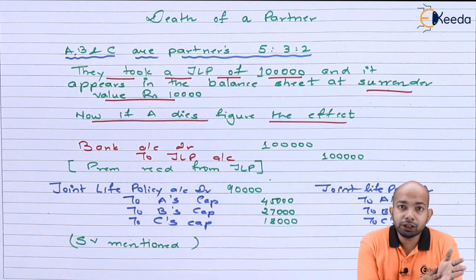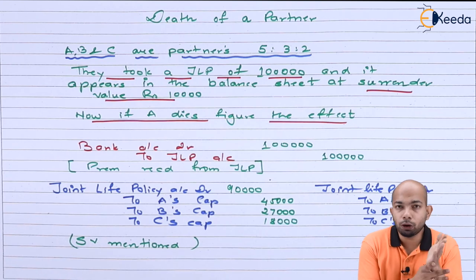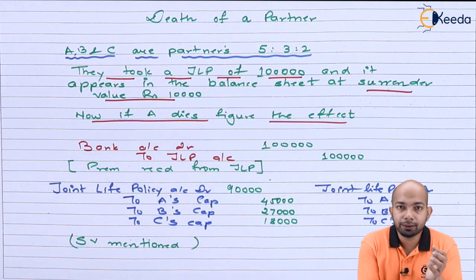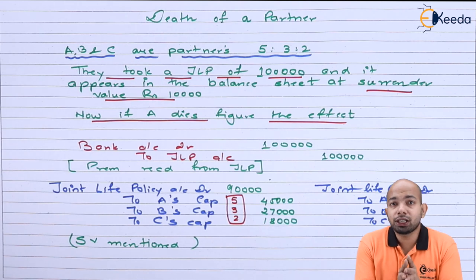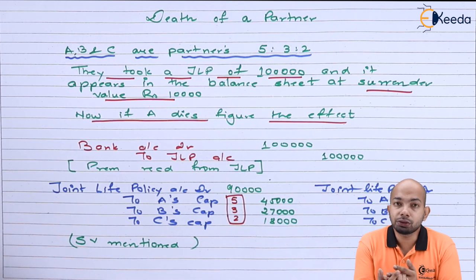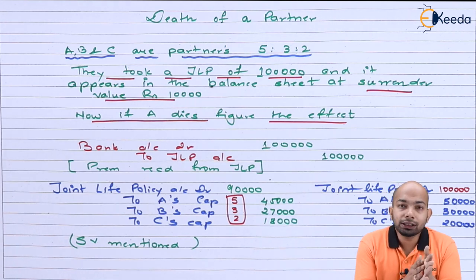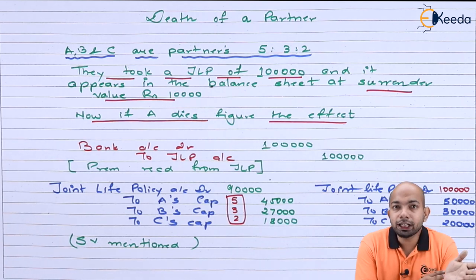10,000 has already been mentioned as the surrender value, so that is accounted for. The 90,000 that we are receiving is additional profit, so that profit is supposed to be divided in the ratio of 5:3:2 to the individual partners — and that is what we have done here. Now, if the same thing is mentioned as 1 lakh in the balance sheet, we'll be getting 1 lakh but that will be divided in the ratio of 5:3:2 again — meaning 50,000 for A, 30,000 for B, and 20,000 for C.